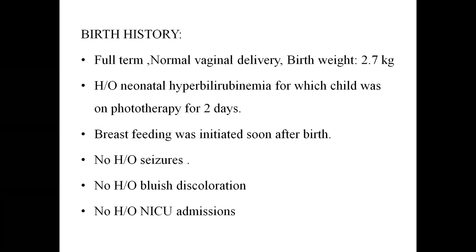Birth history: full-term normal vaginal delivery, birth weight 2.7 kg. History of neonatal hyperbilirubinemia for which the child was on phototherapy for two days — most Down syndrome children will have associated neonatal jaundice. Breastfeeding was initiated soon after birth, indicating a relatively normal neonatal period. No history of seizures, no history of bluish discoloration, no NICU admissions.